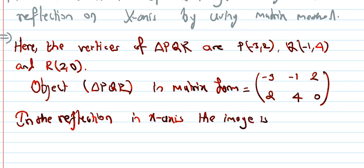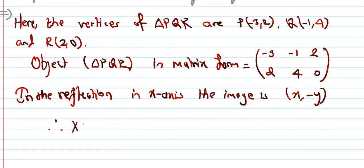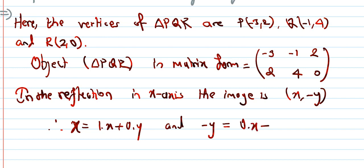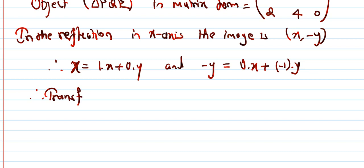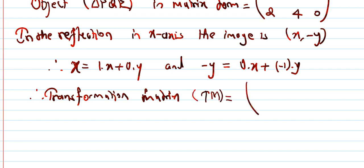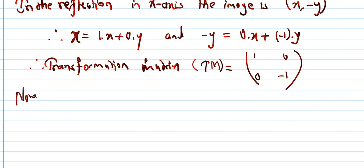In the reflection on the x-axis, the image of (x, y) is (x, -y), which gives: 1·x + 0·y for the x-component and 0·x + (-1)·y for the y-component. Therefore the transformation matrix is [1, 0; 0, -1].